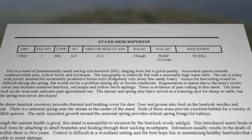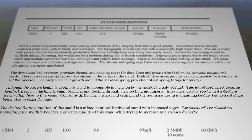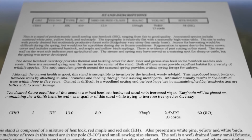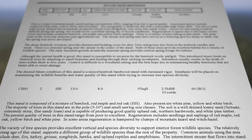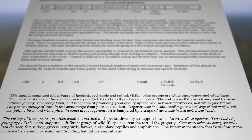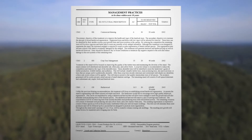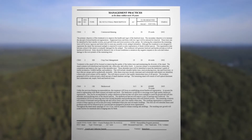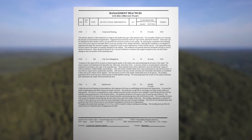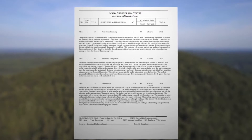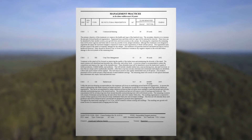Stands are based on age class, diversity, composition, and also stocking levels and soil. A management plan also includes a recommendation section, which is the most important because that guides the landowner in future management, and it's also broken down into a timeline.